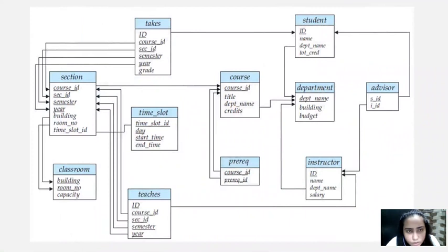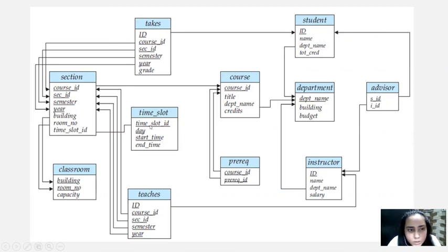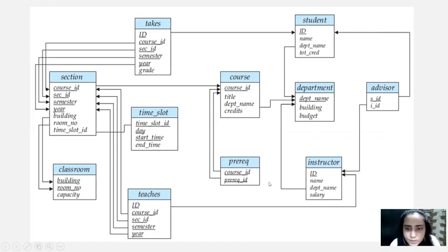Given here is what we'd call a schema diagram. What a schema diagram basically shows is which relations are there, and along with the relations it tells you what attributes are present in those relations. Whatever is underlined would be the primary key. And then as you can see there are lots of arrows going in and out everywhere. If you consider 'course', you can see that there are some arrows coming towards course ID.